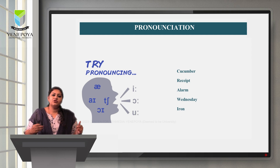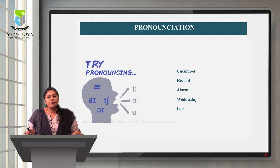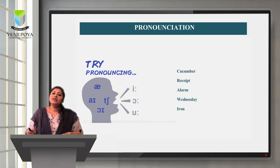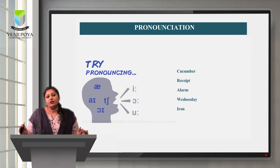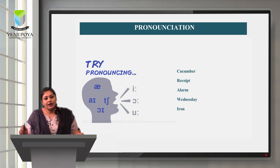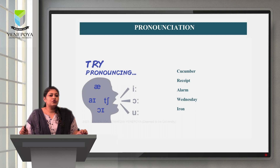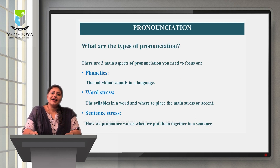The third word is A-L-A-R-M. It is not 'alarum' — it is 'alarm.' Next, W-E-D-N-E-S-D-A-Y: do not pronounce it as 'Wednesday' — the correct pronunciation is 'Wednesday.' Finally, I-R-O-N: most people say 'iron' but the correct pronunciation is 'iron.'